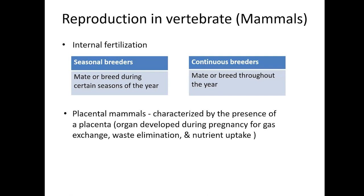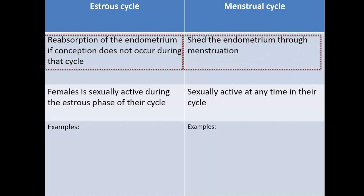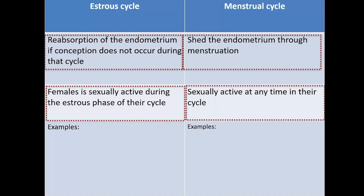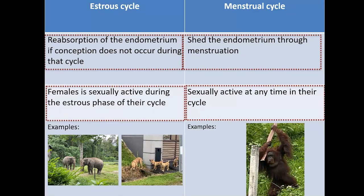Two types of cycles occur in female mammals. Humans and many other primates have the menstrual cycle, while other mammals have the estrous cycle. In the estrous cycle, reabsorption of the endometrium occurs if conception does not occur during that cycle, while animals with a menstrual cycle shed the endometrium through menstruation. Females with an estrous cycle are only sexually active during the estrous phase, whereas females with a menstrual cycle can be sexually active at any time. Examples of animals with an estrous cycle include elephants and dogs; examples of menstruating animals are apes and humans.